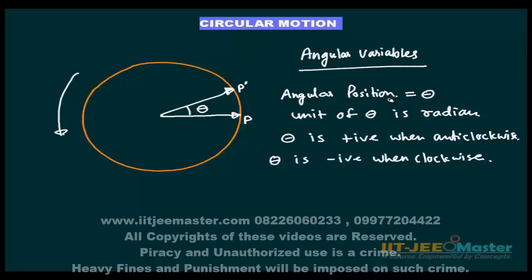Next we will see angular velocity. Angular velocity is defined as change of theta with respect to time and denoted by omega. So angular velocity is a vector as it is understood by its name only.